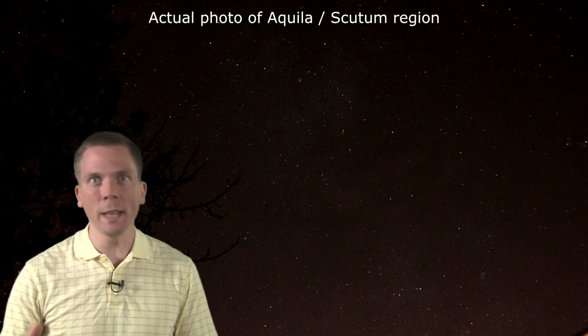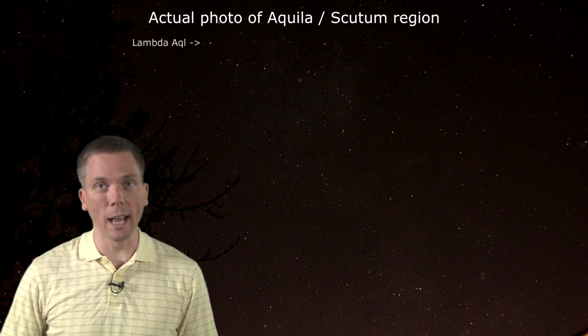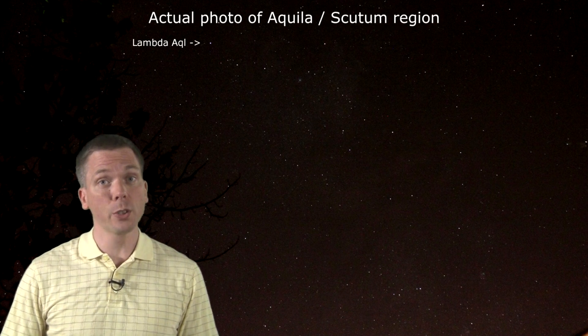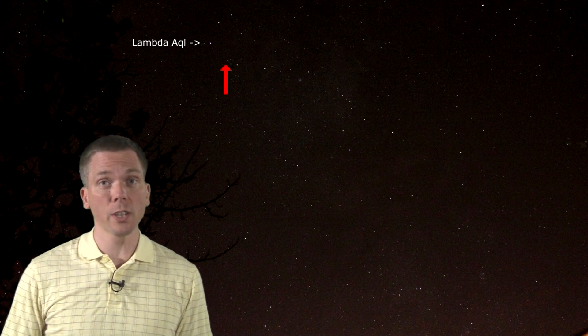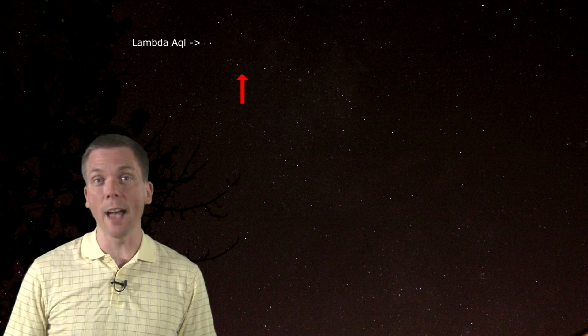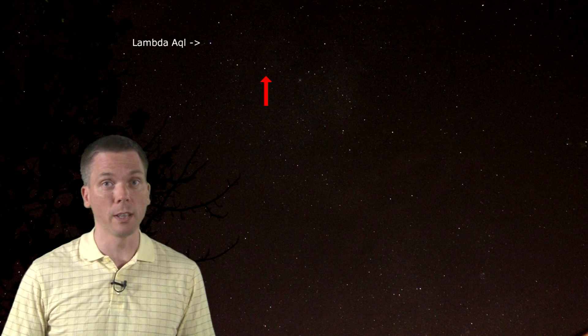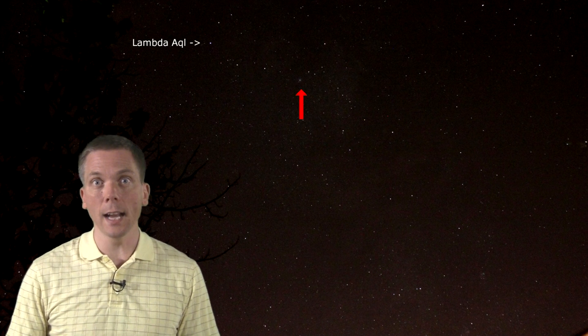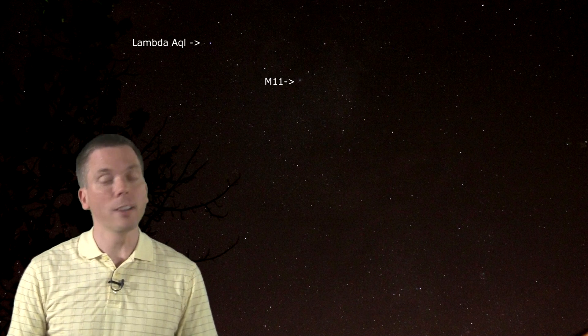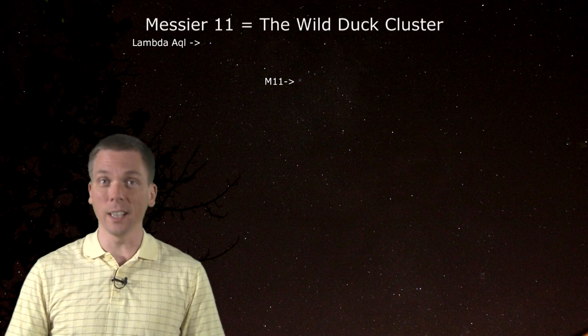Alrighty, so let's zoom in a bit. At Lambda Aquilae, we are not far from the border of Scutum the shield. Follow this easy to see trail of stars, you'll hop about a degree and a half each time, each star slightly dimmer than the last. Now curve back just a tad, and there is Messier 11, also known as the Wild Duck Cluster, due to its triangular shape like ducks in flight.